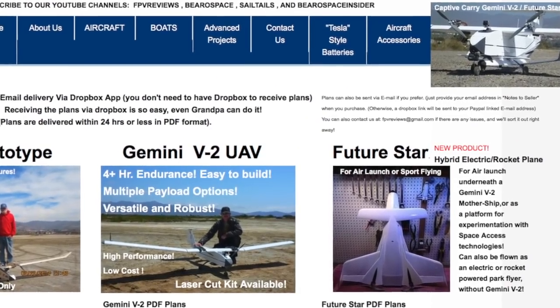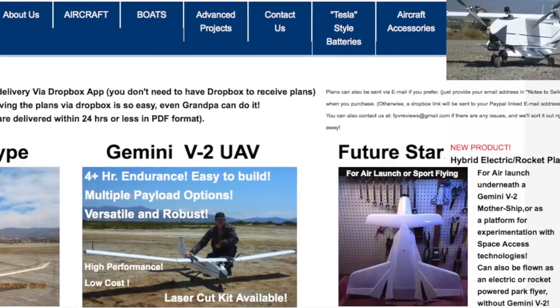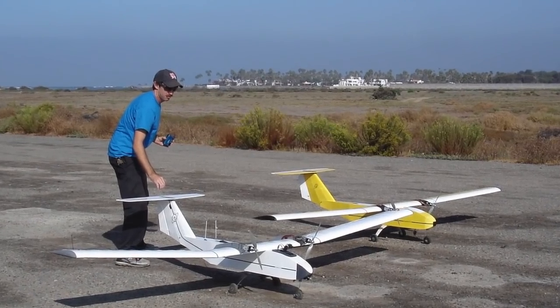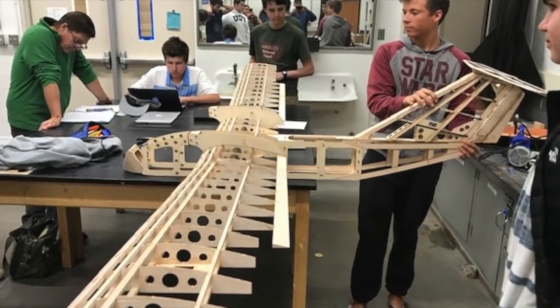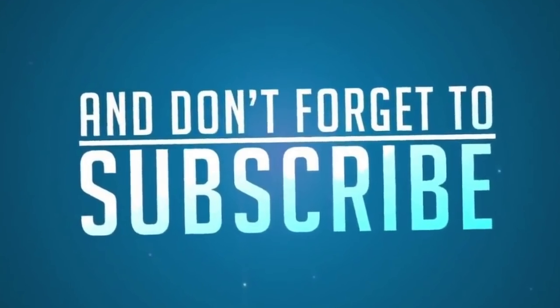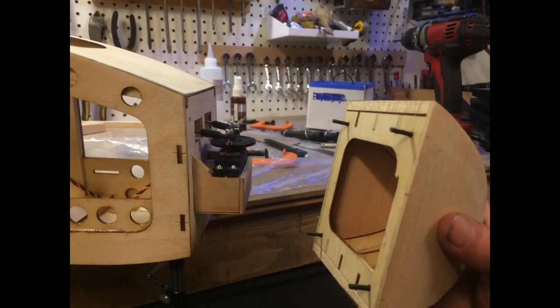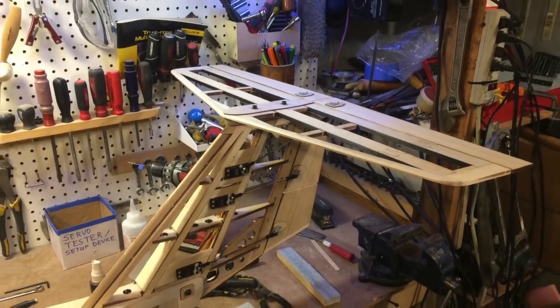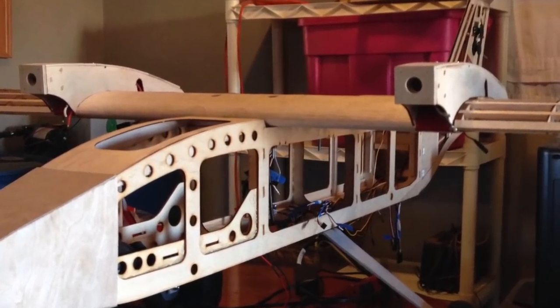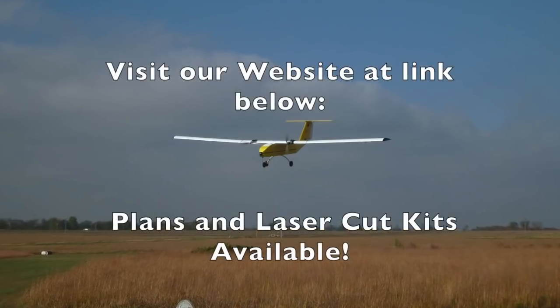Don't forget to visit our website at the links below to find out more about the Gemini V2 and the laser cut kit by Flying Squirrel Models. Subscribe and hit the bell icon so you don't miss future episodes. And stay tuned for the next build videos covering the nose fairing, tail, and wings. Until next time, have a good one.